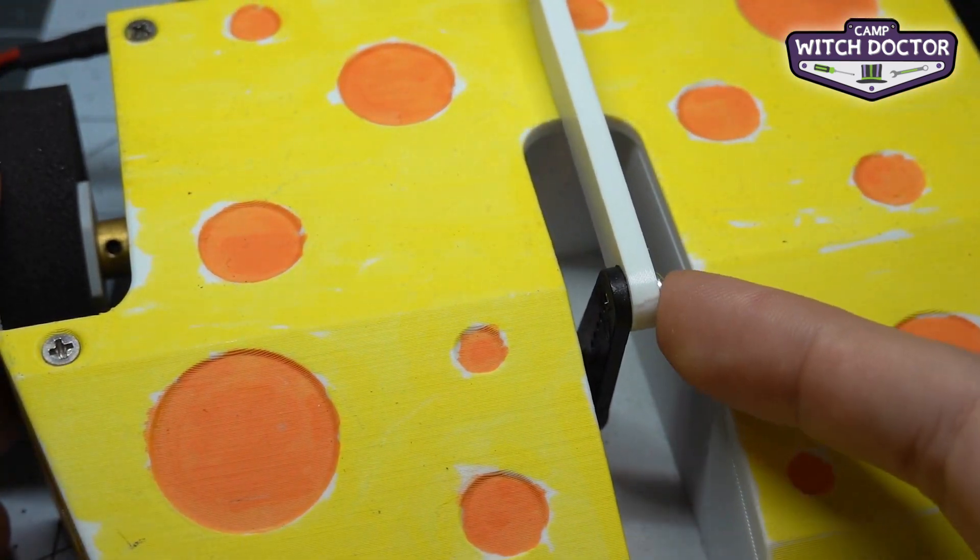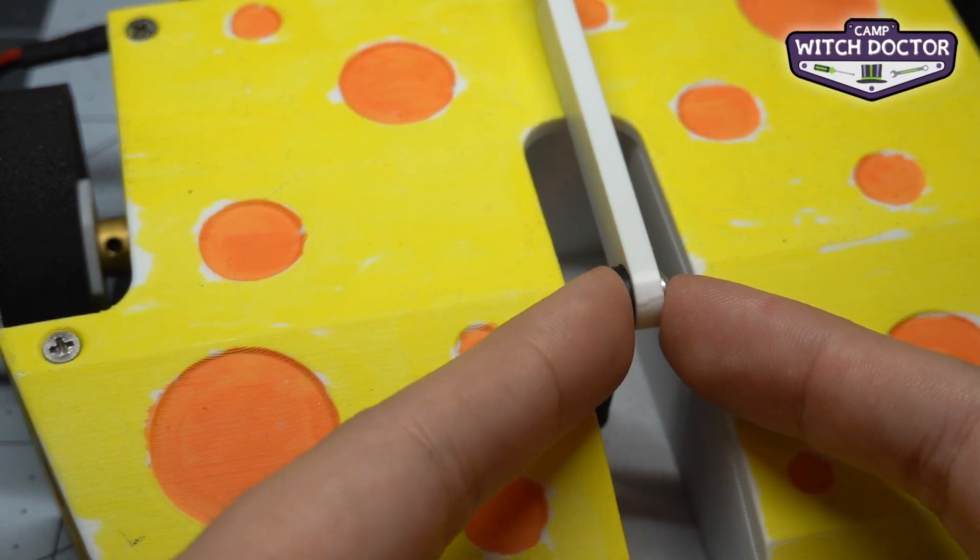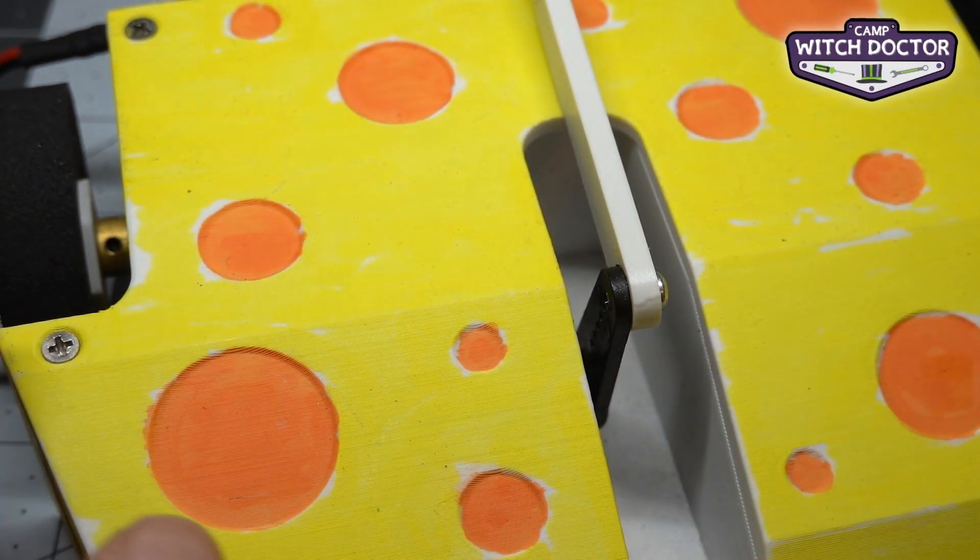If you have problems with this screw backing out when you're using your robot a lot, you can actually put a little dab of hot glue here to keep it from falling out.